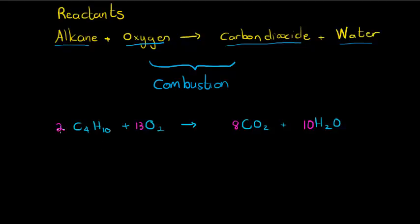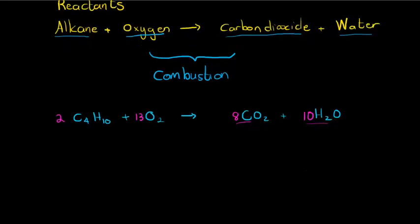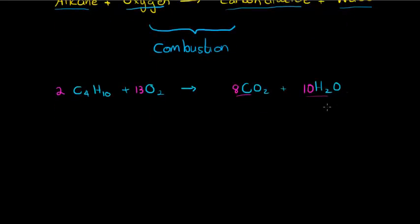Let's quickly verify: eight carbons on the left, eight carbons on the right. Twenty hydrogens on the left, twenty hydrogens on the right. Oxygens: twenty-six on the left; eight times two is sixteen, plus ten from the water molecules gives twenty-six — balanced. That was butane, lighter fluid burning up.